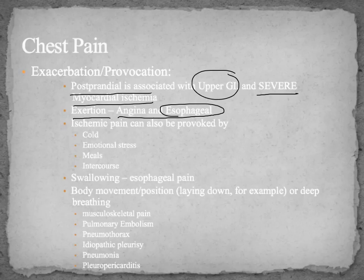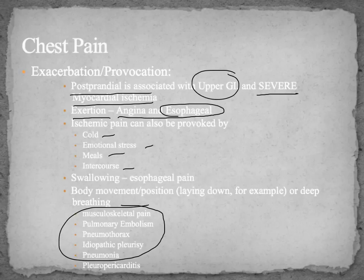Ischemic pain is associated with cold, emotional stress, meals, and intercourse — so if someone's having sex and gets a heart attack, it happens. For positional things: laying down would cause more pain with pneumonia, breathing in deeply suggests pulmonary causes, and pneumothorax.